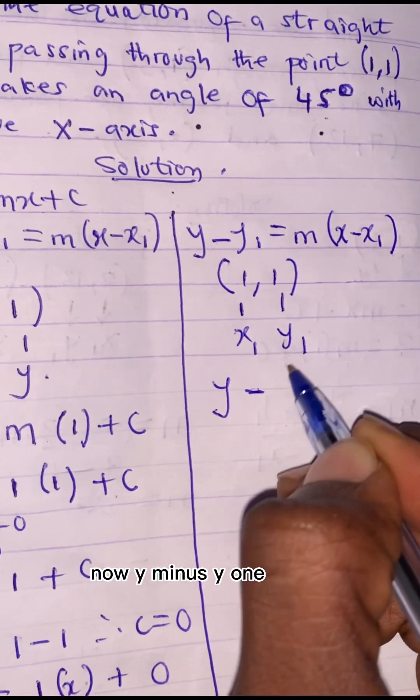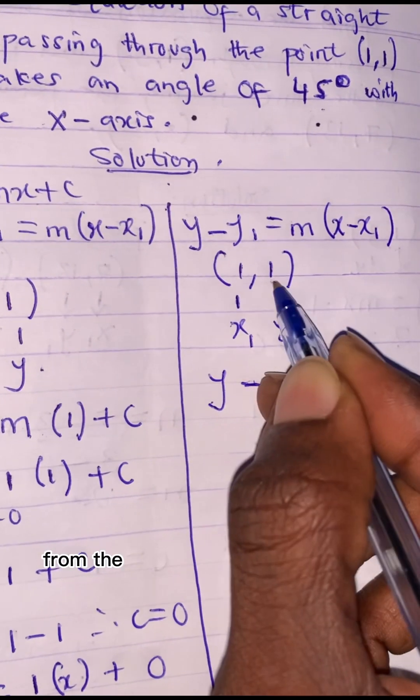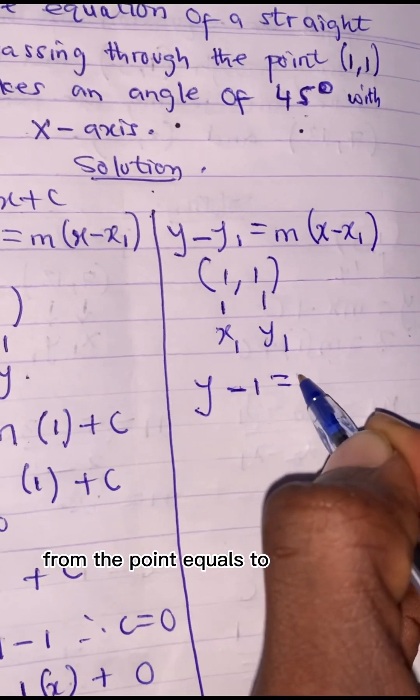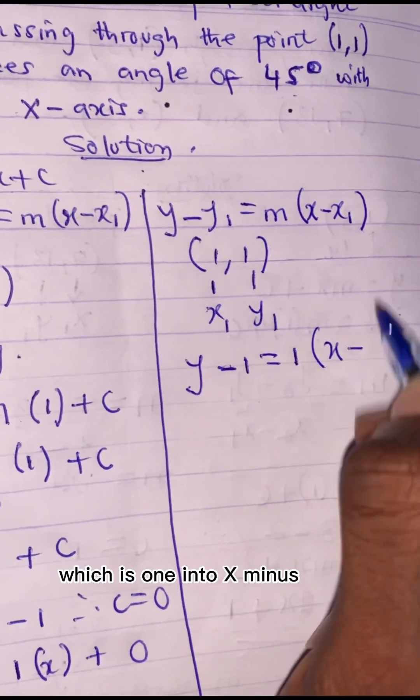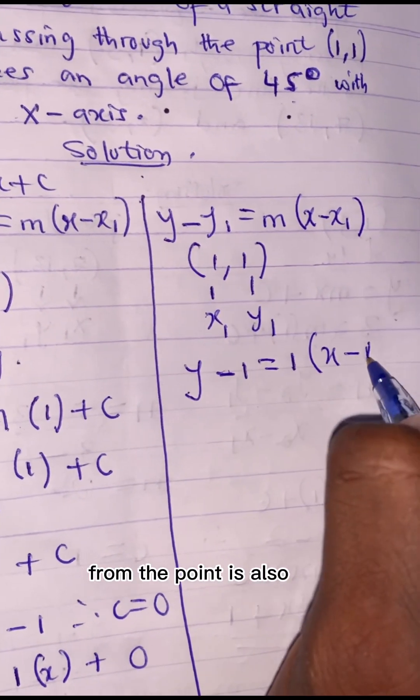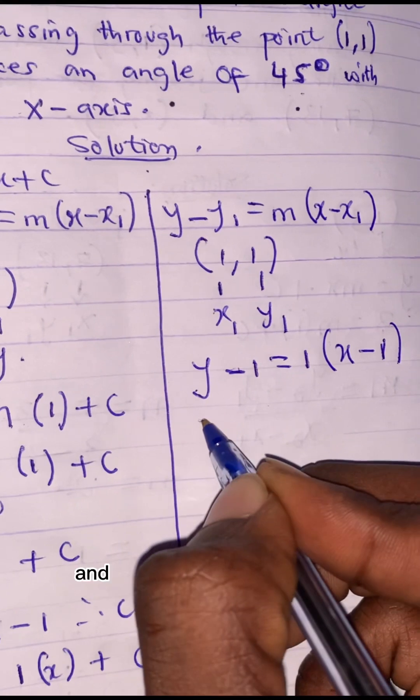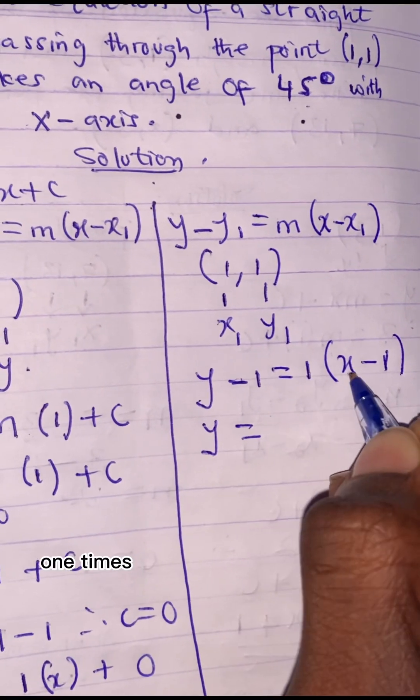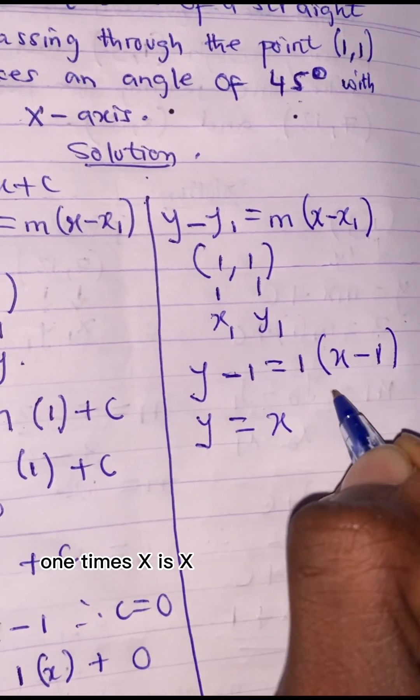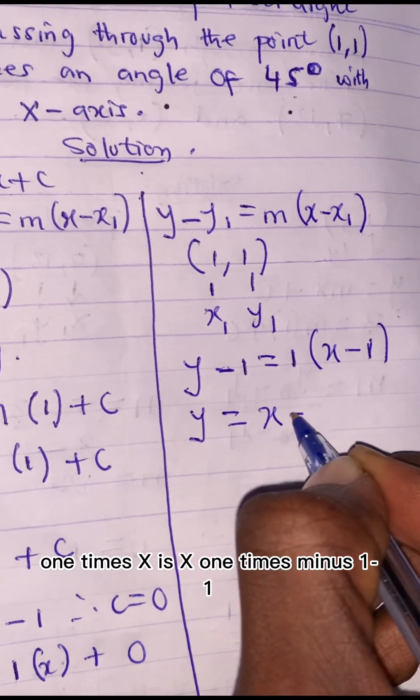y - y1 is 1 from the point equals to m is tan 45 degrees, which is 1 into x - x1 from the point is also 1. And this would be y = 1 times x is x, 1 times minus 1, minus 1.